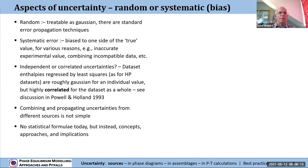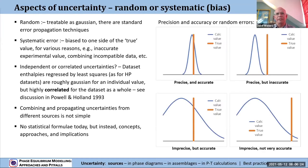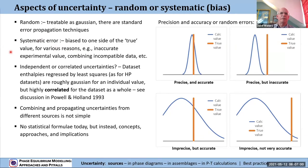Among the aspects of uncertainty, we need to consider whether uncertainties are random or systematic. If uncertainties are random, they can be treated by standard error propagation techniques — they're effectively given a normal distribution, or they're Gaussian. Systematic uncertainty is when we find that our calculated result is biased to one side or other of what we believe to be the true value, due to an inaccurate experimental value or combining incompatible data.